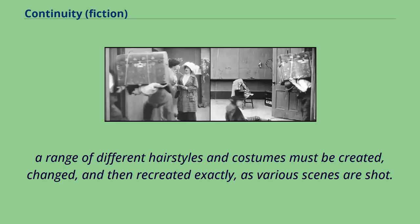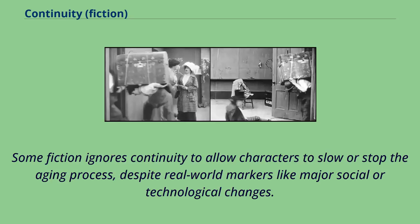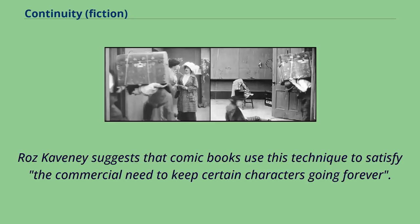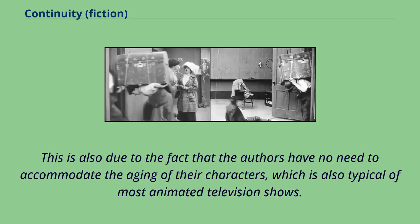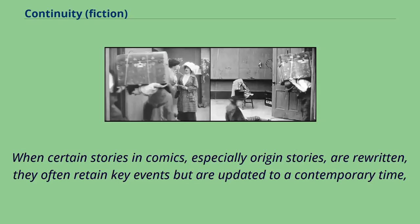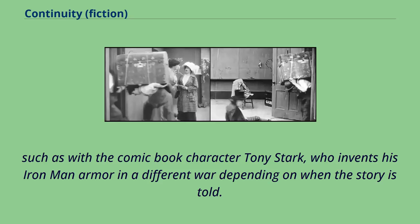Some fiction ignores continuity to allow characters to slow or stop the aging process, despite real-world markers like major social or technological changes. Comics sometimes refer to this as a floating timeline, where the fiction takes place in a continuous present. Roz Cavani suggests that comic books use this technique to satisfy the commercial need to keep certain characters going forever. This is also due to the fact that authors have no need to accommodate the aging of their characters, which is also typical of most animated television shows. Kevin Warner compares the use of a sliding timescale in comics to the way ageless figures in myths are depicted interacting with the contemporary world of the storyteller. Such as with the comic book character Tony Stark, who invents his Iron Man armor in a different war depending on when the story is told.